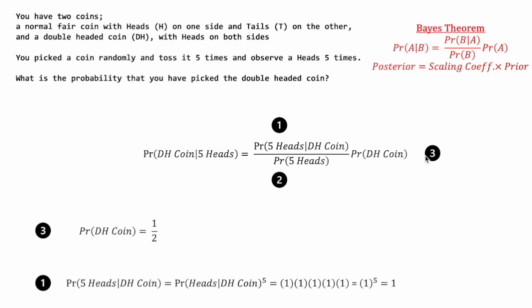Segment one: the probability of getting five heads conditioned on using the double-headed coin. Because these are five independent flips, this is just the probability of getting heads conditioned on using the double-headed coin, raised to the power of five. From our previous table, we know that the probability of getting heads on a double-headed coin is one, because there's only one outcome. So it's one raised to the power of five, giving us one.